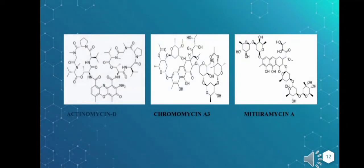These are the structures of the Type 2 inhibitors. Actinomycin D contains two cyclic peptides bound to a chromophoric phenoxazine ring that binds specifically to the minor groove of the DNA double helix, preventing it from being a template for RNA synthesis. Its ability to inhibit the growth of rapidly dividing cells makes it an effective agent in cancer treatment.